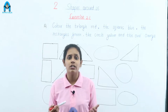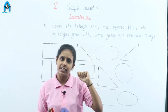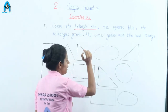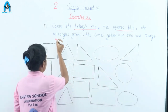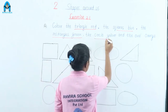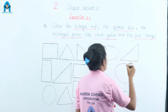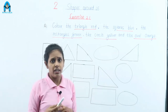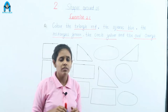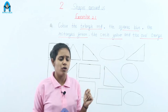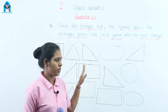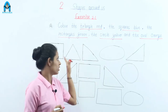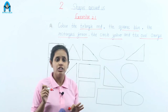Now for our practice, we can do some exercise — Exercise 2.1. First, read the question: Color the triangles red, squares blue, rectangles green, circles yellow, and ovals orange. In this question, we have to find many different types of shapes, identify each shape, and fill in the color as instructed.